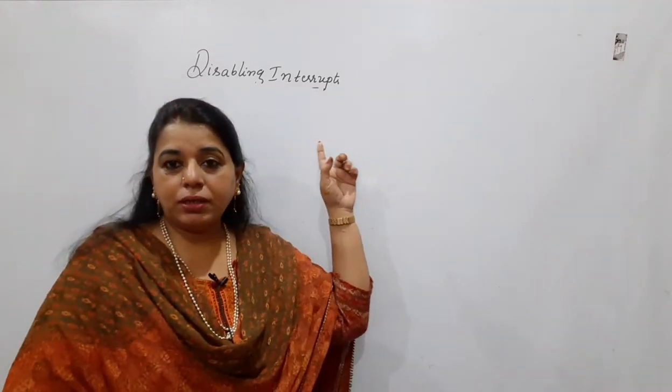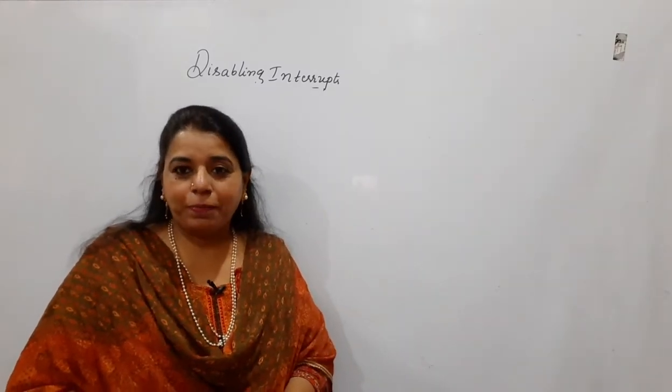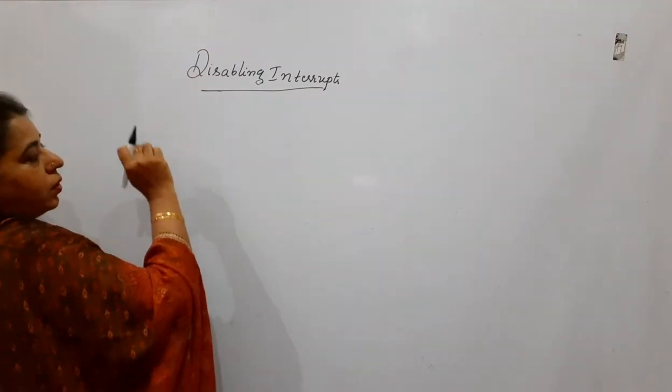Also in the list was this heading, disabling interrupts. This is also one of the solutions to solve the critical section problem. Let us see what are the different causes for preemption.